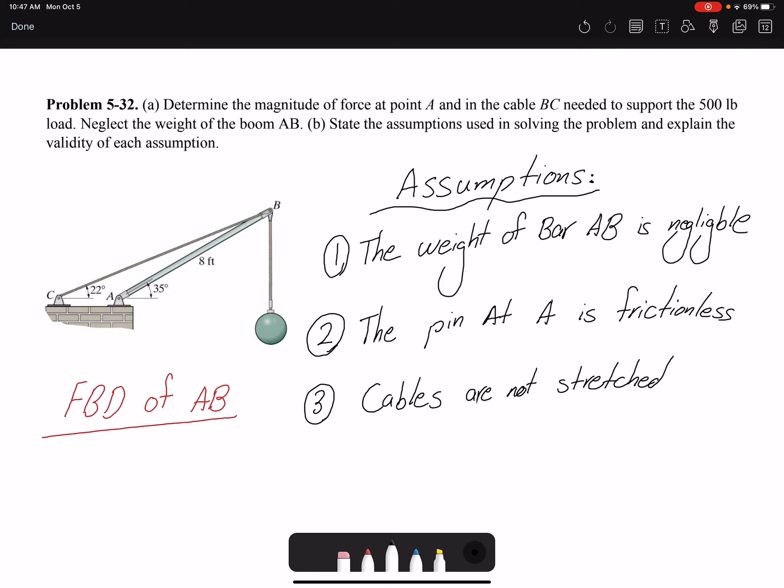We need to identify the validity of each assumption. For the first one, the weight of bar AB is negligible. If you look at the bar, it's eight feet. It depends on what it's made of, but even if it's made of plastic, eight feet is a long bar. So that's a poor assumption. In reality we should not make this assumption. That would introduce significant error into our calculation.